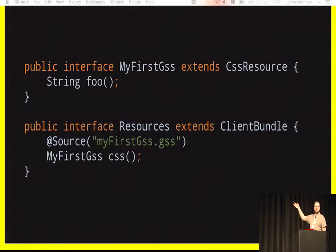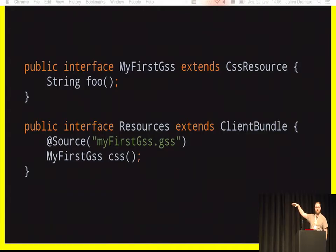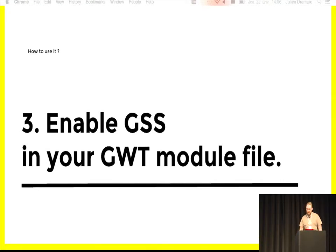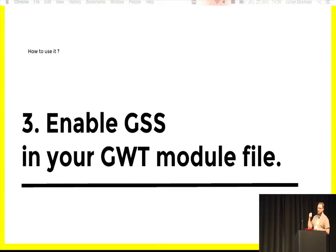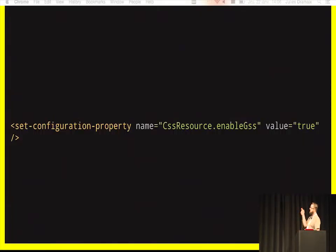Everything you currently use with CSS resource works with GSS. For example, if the name of the method doesn't match the name of your file, you can use the @Source annotation. Then you have to enable GSS. Support was added in Grid 2.7 but is not enabled by default. You have to explicitly tell the compiler to use GSS by setting the configuration property CssResource.enableGss to true.